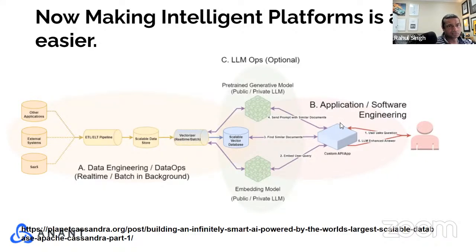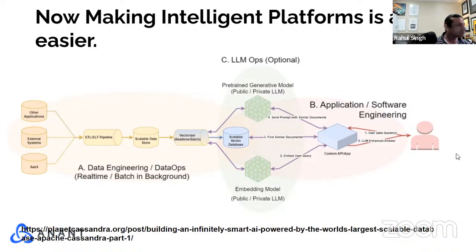Once data is in the vector database, we're able to have software that can talk to the vector database and to the LLMs with prompts. We can iterate relatively quickly. The prompts are the way we are basically tuning the foundational model that we use, whether it's GPT, BARD, or PaLM. It's no longer a monumental feat to make your app intelligent. The three most popular frameworks are LlamaIndex, LangChain, and Semantic Kernel — and they are all open source.